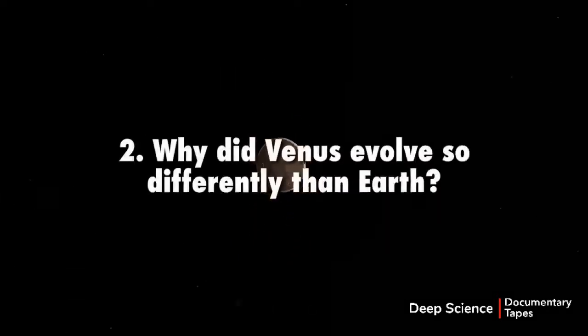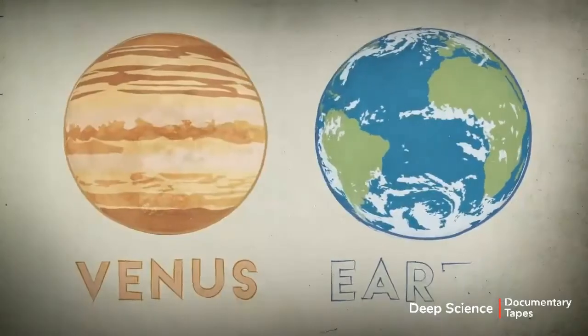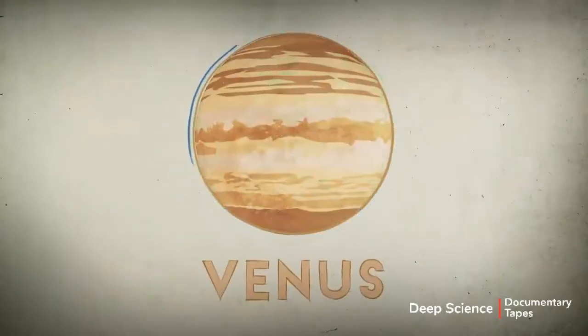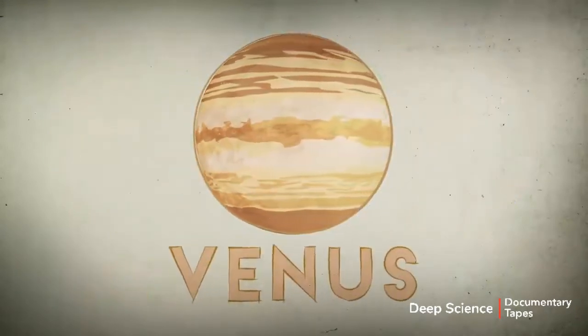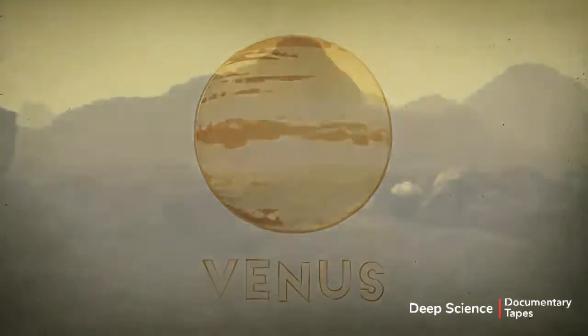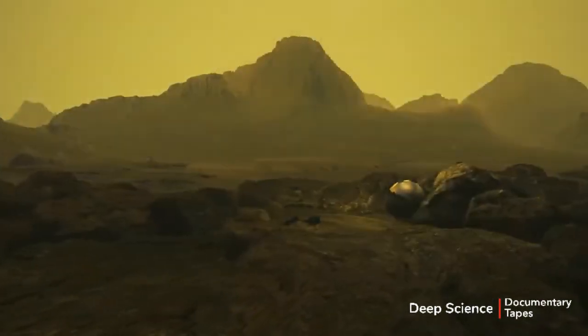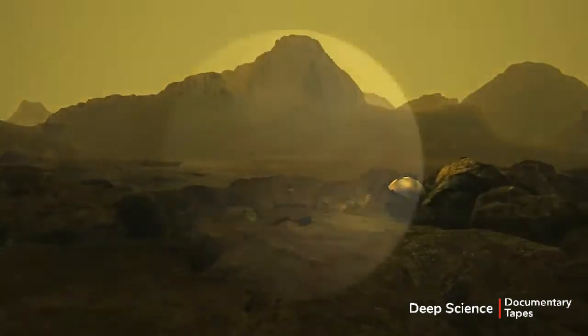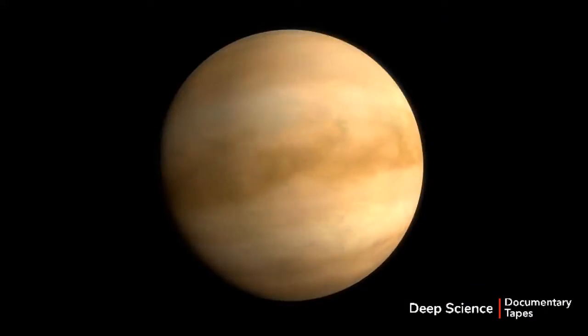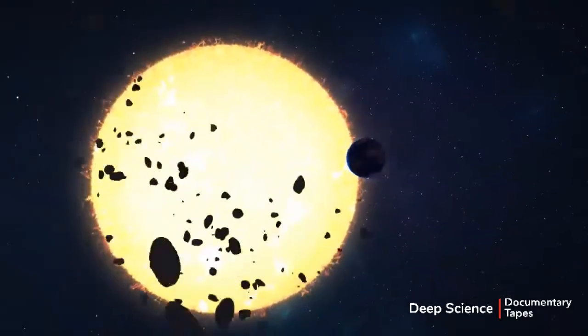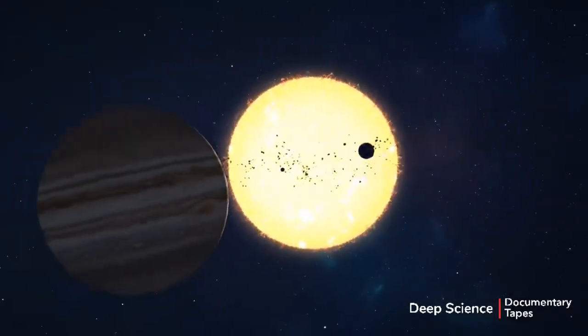Why did Venus evolve so differently than Earth? Venus and Earth are similar in size and density, and yet they are strikingly different. Air pressure at the surface of Venus is 90 times that of Earth. Venus rotates on its axis backwards compared to the other planets in the solar system, and the surface of Venus is over 900 degrees Fahrenheit, making it the hottest planet in our solar system, hot enough to melt lead.